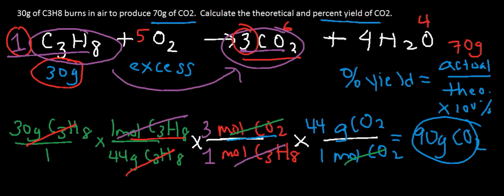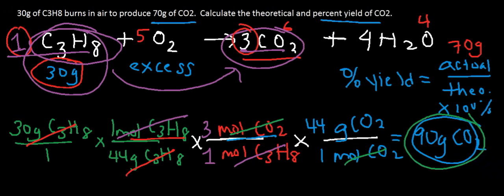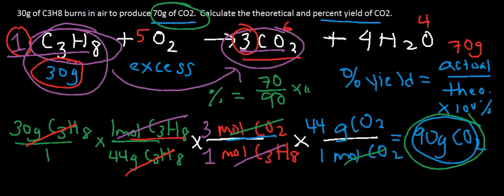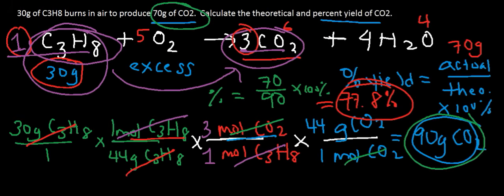So the theoretical yield is 90 grams — that's the maximum amount of CO2 that can be produced if all 30 grams of C3H8 reacts. In this reaction, we only got 70 grams. Now that we have the theoretical yield, we can find the percent yield: 70 divided by 90, times 100% — it's always the smaller number divided by the larger number times 100% — which equals approximately 77.7% or 77.8%. That's the percent yield of this reaction.